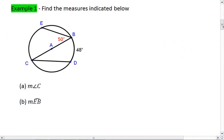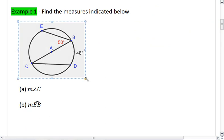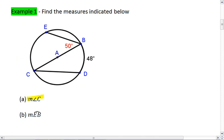Let's work out an example. In example one, I want you to find the measures indicated below. We're given this picture. I want you to determine the measure of angle C and the measure of arc EB. Try this on your own first, and then resume the video when you're ready to check your solution.